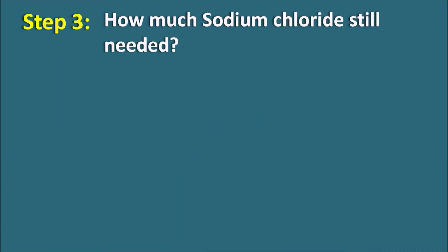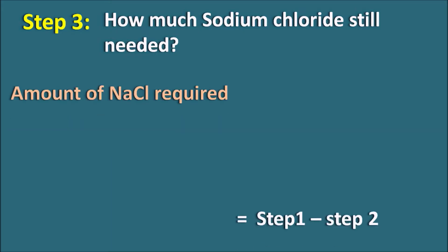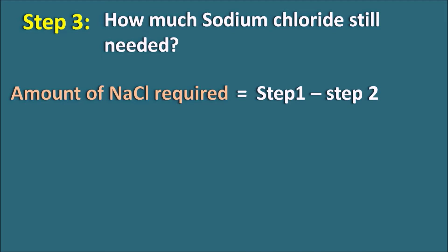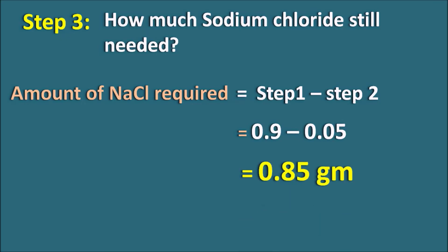Step 3 — how much Sodium Chloride is still needed to produce the isotonic solution? The amount of Sodium Chloride required equals Step 1 minus Step 2. Step 1 gave us 0.9 grams, and Step 2 gave us 0.05 grams. So 0.9 − 0.05 = 0.85 grams of Sodium Chloride is required to produce isotonicity.